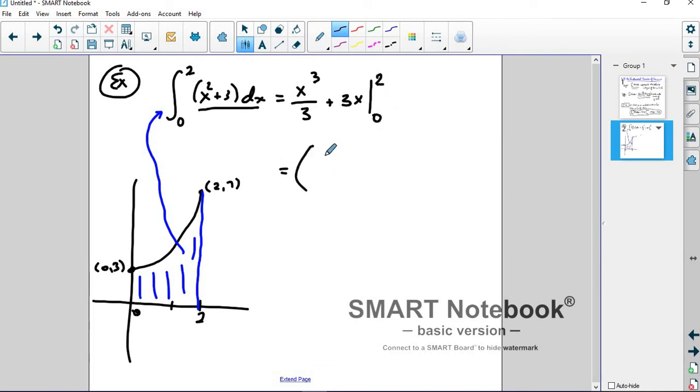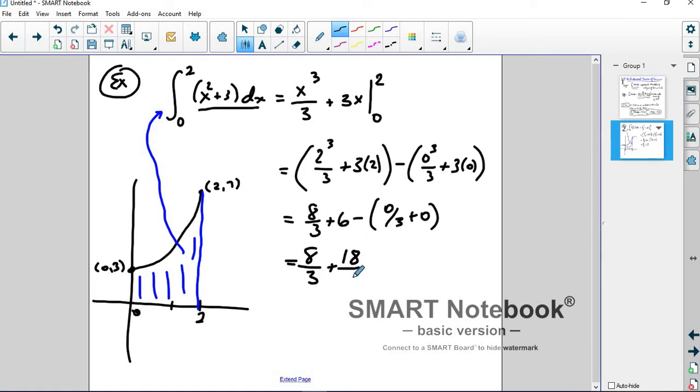And then evaluate from 0 to 2. So again, how do you do that? You plug a 2 in everywhere. You get 2 cubed over 3 plus 3 times 2 minus 0 cubed over 3 plus 3 times 0. You get 8 thirds plus 6 minus 0 over 3 plus 0, which of course all that's 0. And then here, I need to convert 6 to 18 over 3. 18 plus 8 is 26 over 3. And that is the value that you get. When you do a definite integral, you should get a number out. Your answer should be a number.